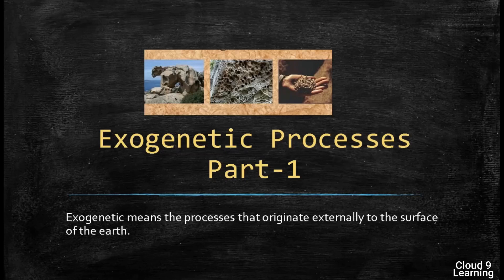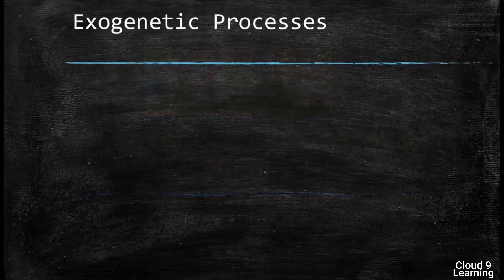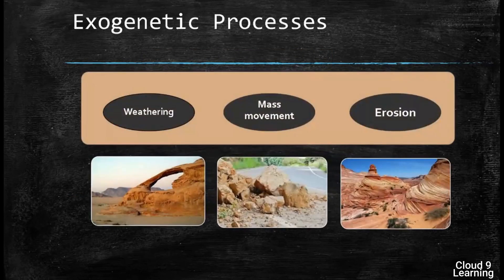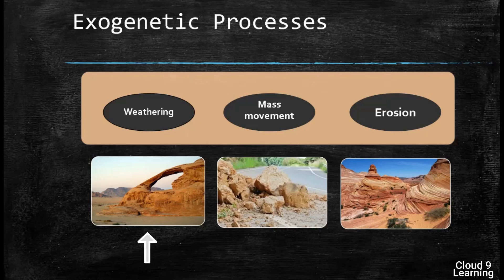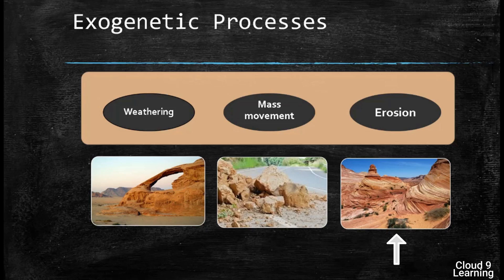In this chapter we are going to study the three ways by which exogenetic processes take place. Number one: weathering — this picture shows a weathered rock. Number two: mass movement, also known as mass wasting — here the rocks are broken into smaller pieces and gathered at the foothills. Number three: erosion — here the rocks are being eroded.